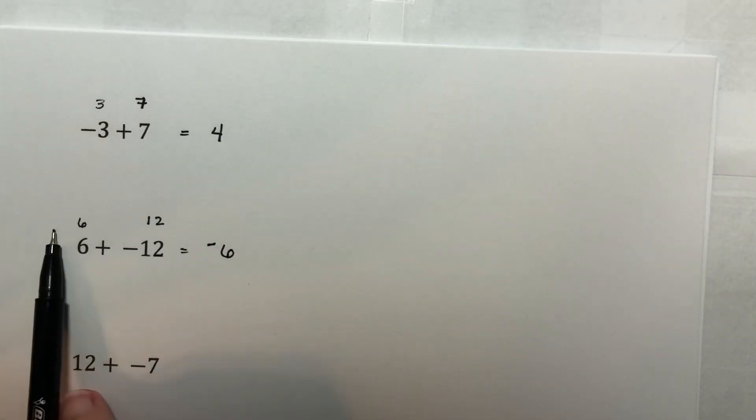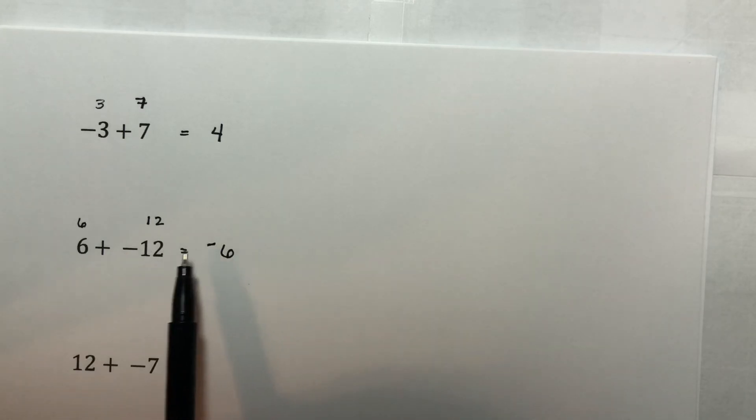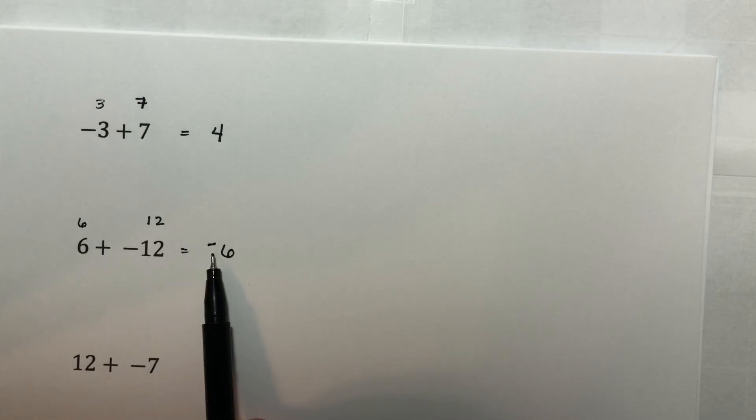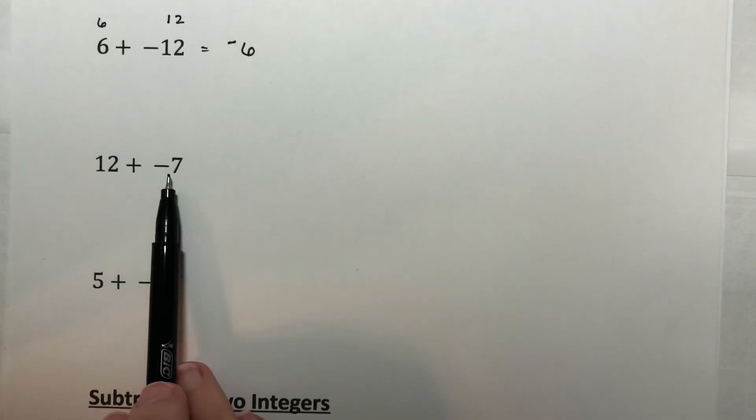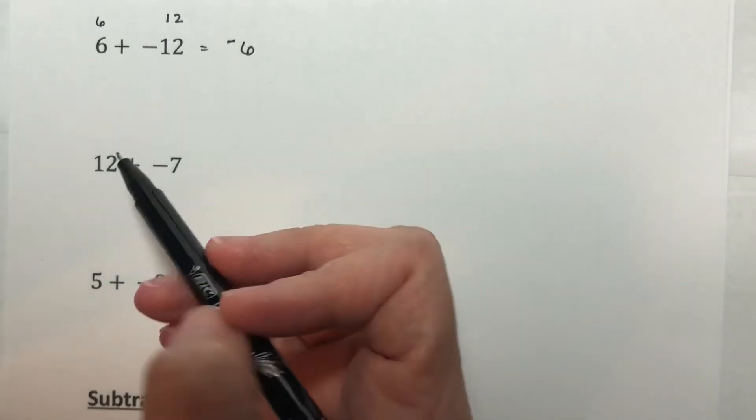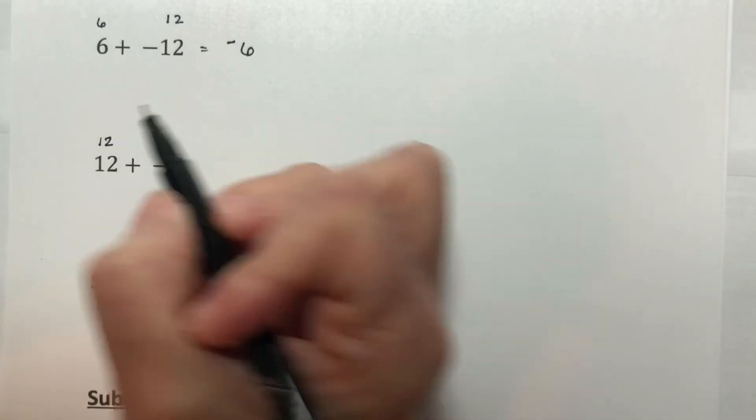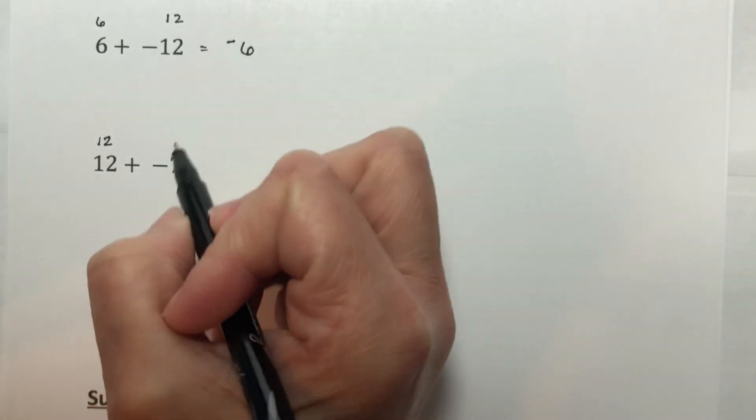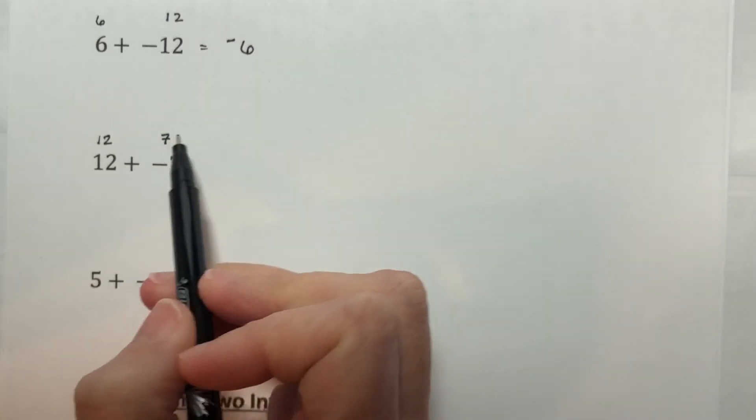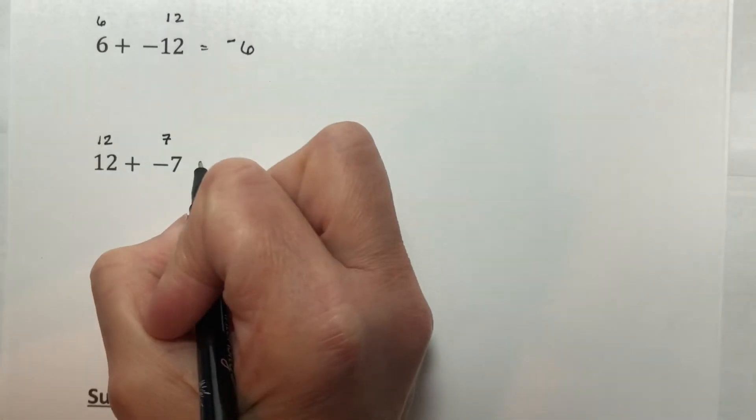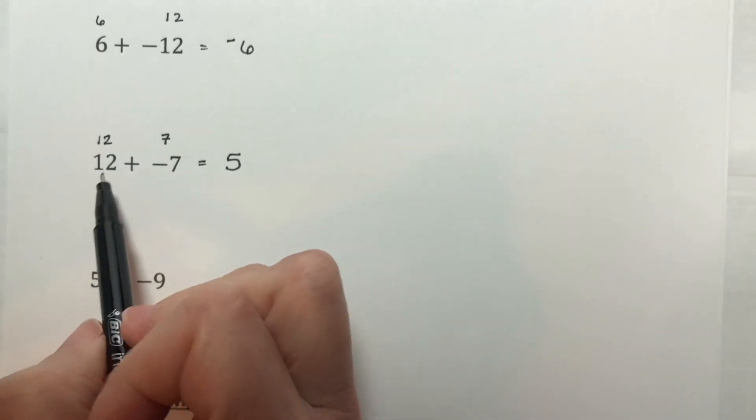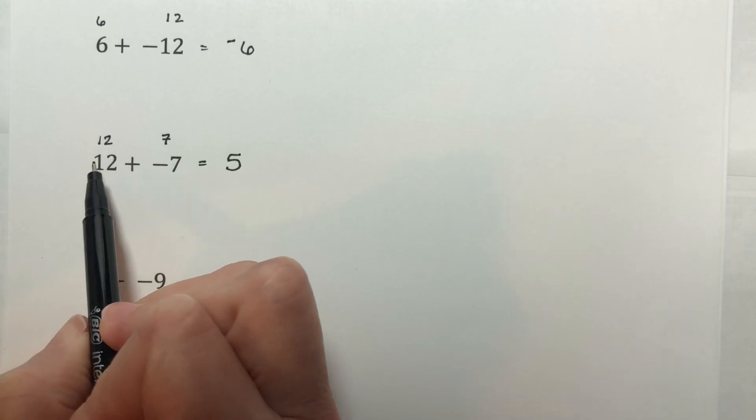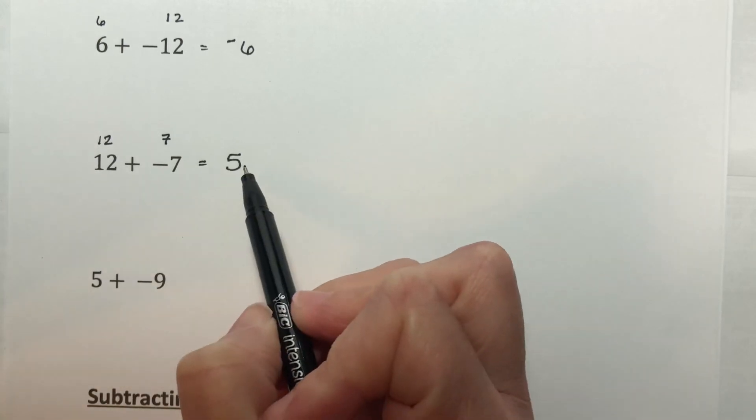So you find the absolute values, you subtract them, and then whatever the sign was on your larger absolute value, that's the sign of your answer. Let's look at 12 plus negative seven. The absolute value of 12 is 12. The absolute value of negative seven is seven. Subtract the smaller from the larger, 12 minus seven is five. And then my larger absolute value was the 12. The 12 is positive. So my answer is positive.